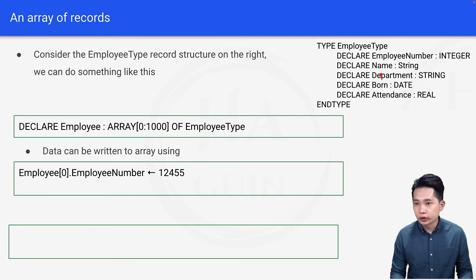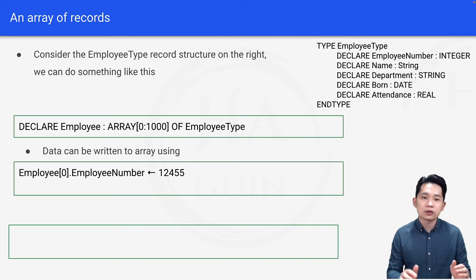So let's look at this. Where is EmployeeNumber? So EmployeeNumber is an integer data type. Therefore, we'll assign an integer value here. So this is how you can assign the employee number of the first element inside the array.